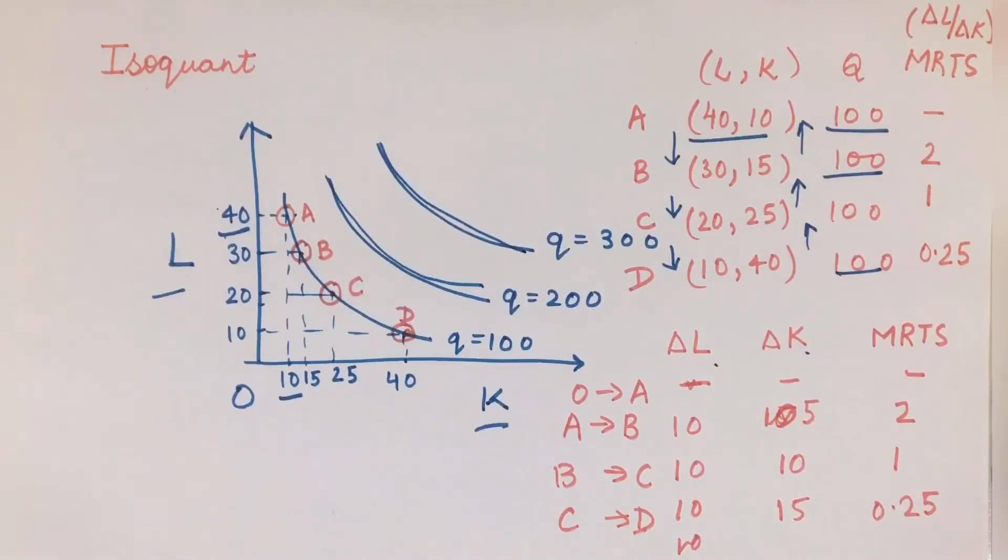Now let's discuss the concept of MRTS. In production theory, we generally assume that these isoquants are downward sloping and convex to the origin. We will not go into the technicalities in this video. What I am going to explain is why this is happening - what is the nature of MRTS, that is the marginal rate of technical substitution. The formula for MRTS is ΔL/ΔK.